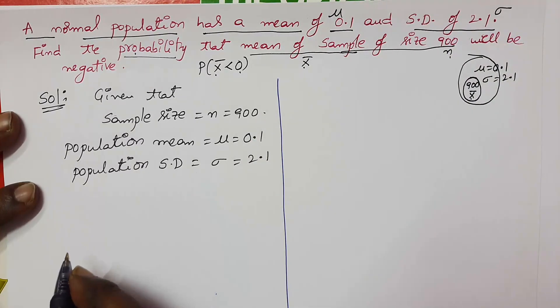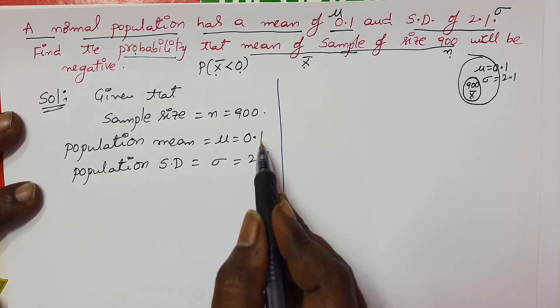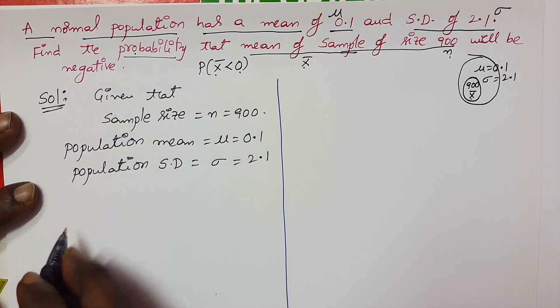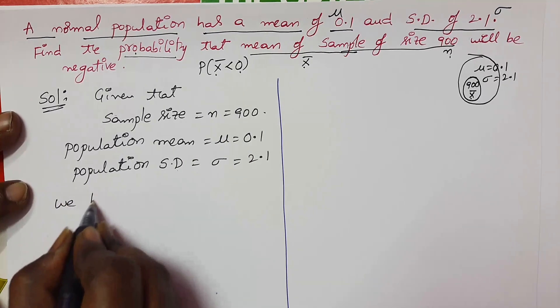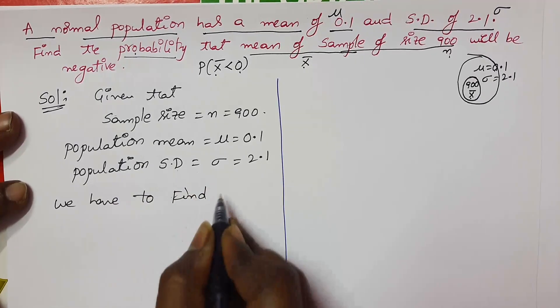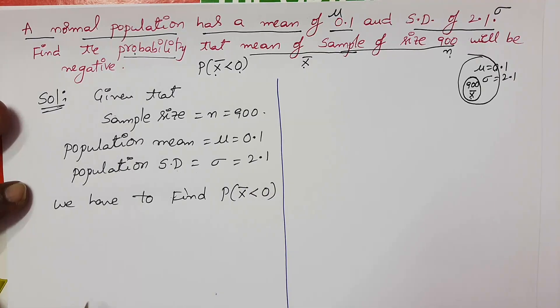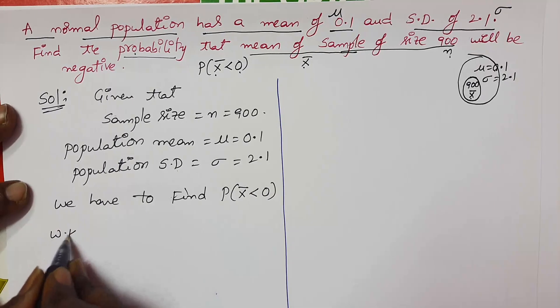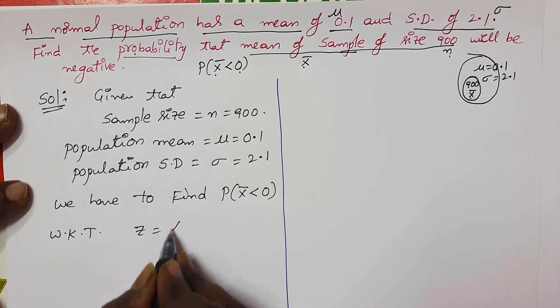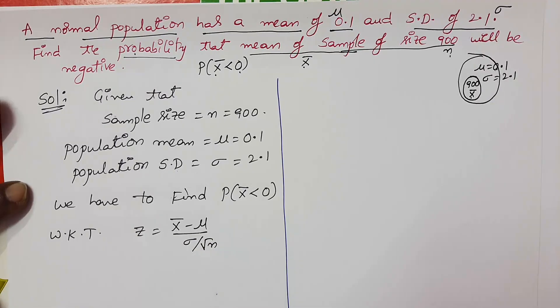In general, standard deviation does not cross the population mean, sometimes it crosses population mean μ. We have to find probability that the sample mean x̄ will be negative, nothing but less than 0. So we know that the standard normal variate z equals x̄ minus μ by σ by root n, according to the central limit theorem.